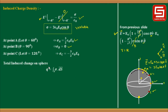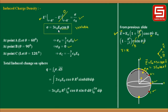Total induced charge on the sphere: Q = ∫ σ dS = ∫ 3ε₀E₀ cosθ · R² sinθ dθ dφ. Taking constants outside: 3ε₀E₀R² ∫₀^π cosθ sinθ dθ ∫₀^(2π) dφ. The integral ∫₀^π cosθ sinθ dθ = 0, so the total induced charge on the entire surface is zero.